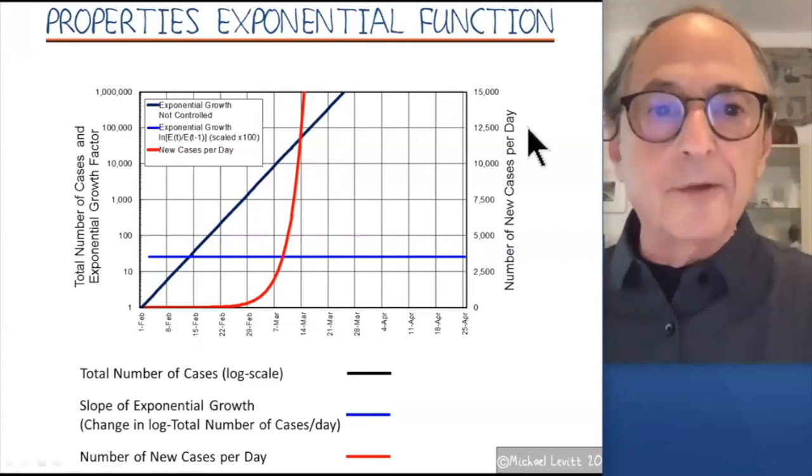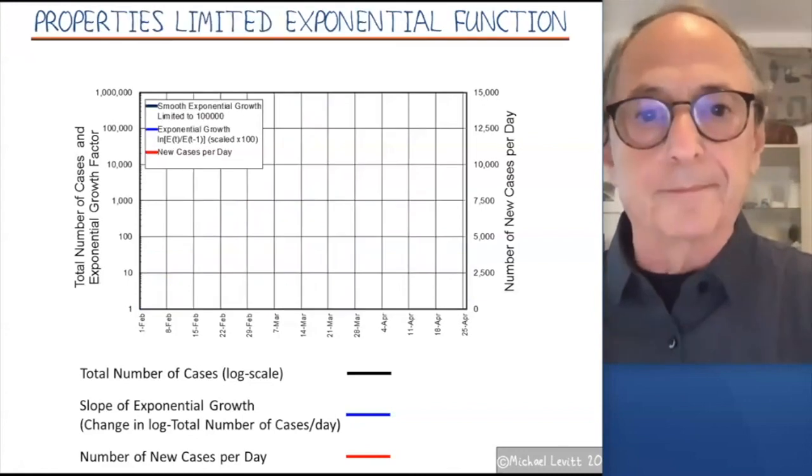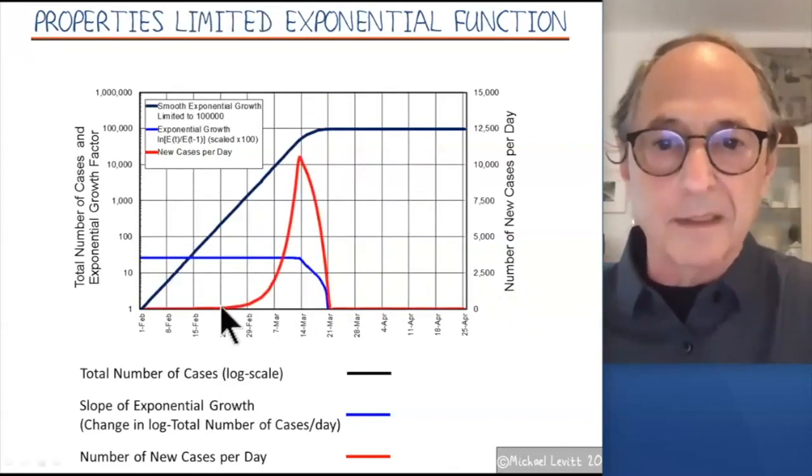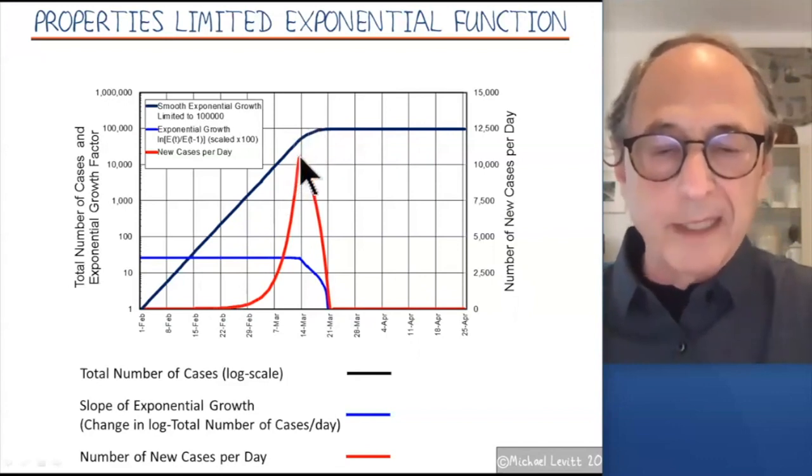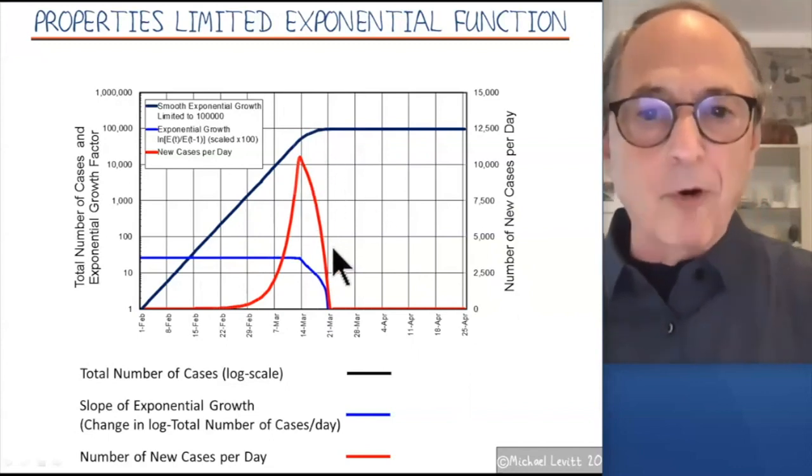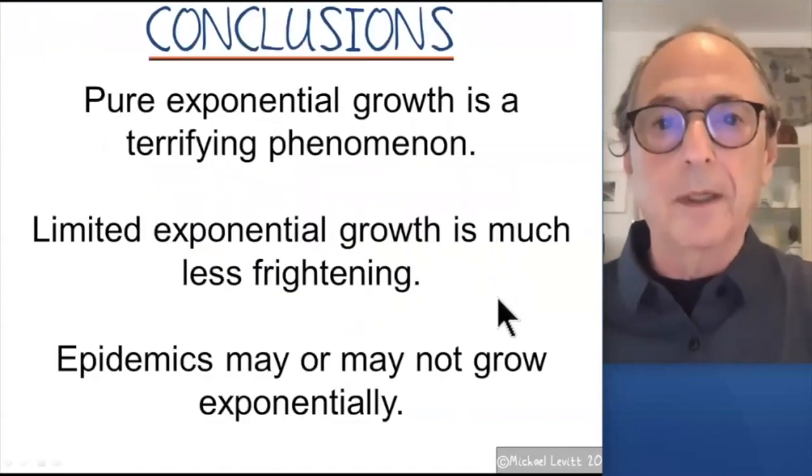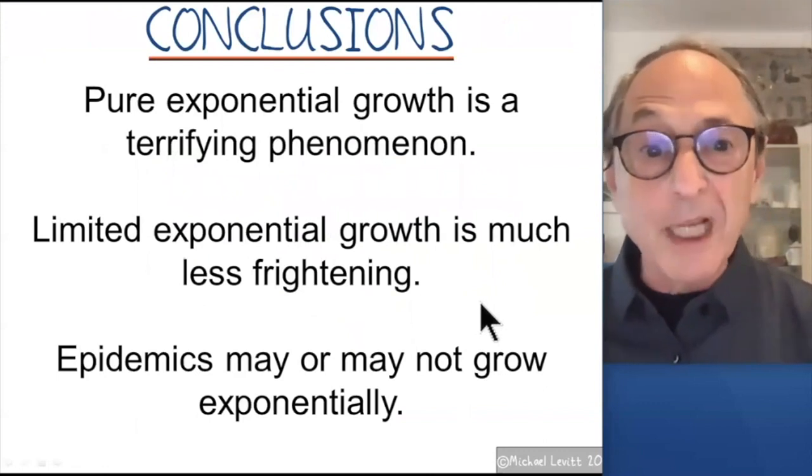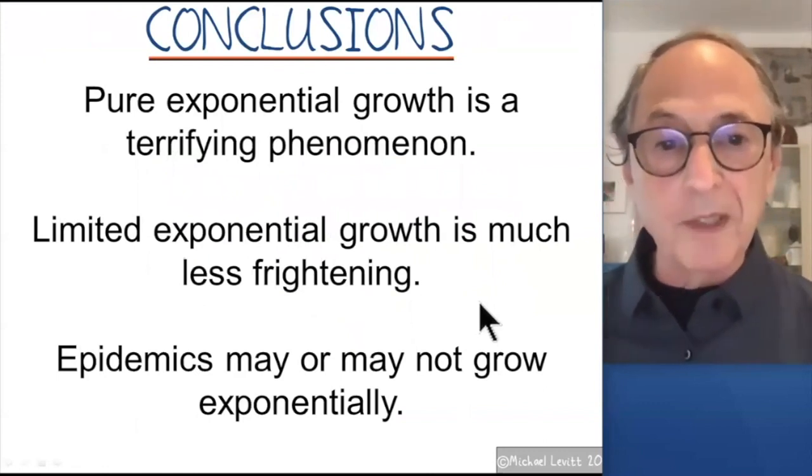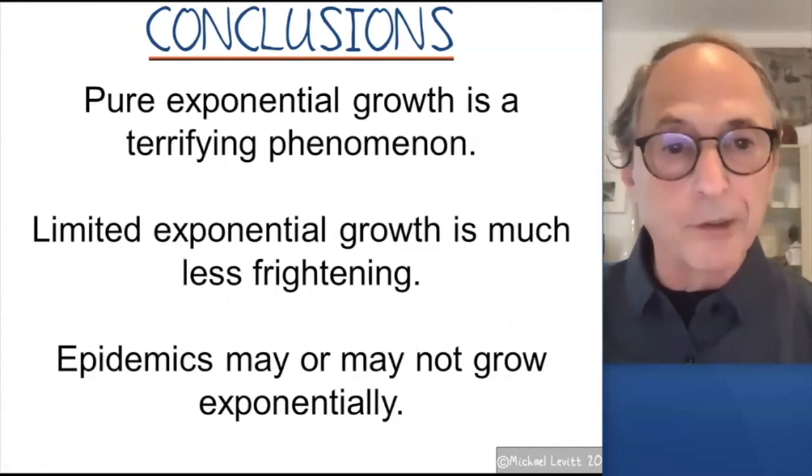Now, let's see what happens when we do exactly the same thing for the exponential function that's been limited. Again, the number of new cases shown in this axis goes up, but as soon as we start to flatten the curve, the number of new cases hits a maximum and it comes crashing down. So this starts to look much more like what we're seeing in real epidemics. I want to end this section with a conclusion. Pure exponential growth is a terrifying phenomenon. Limited exponential growth is much less disheartening. The trouble is, we don't really know it's limiting and epidemics may or may not grow exponentially.